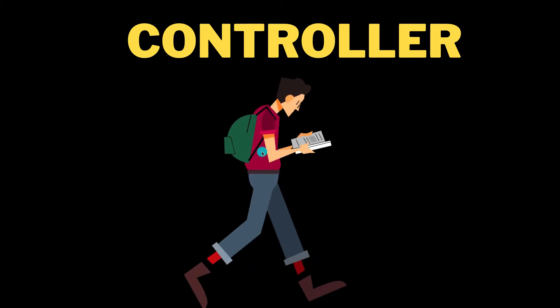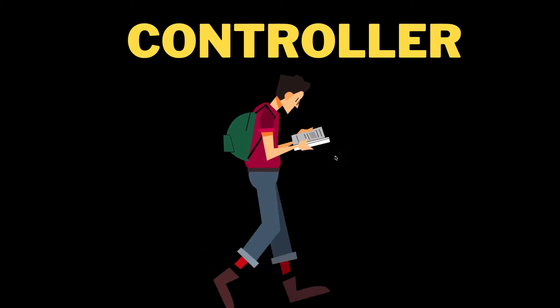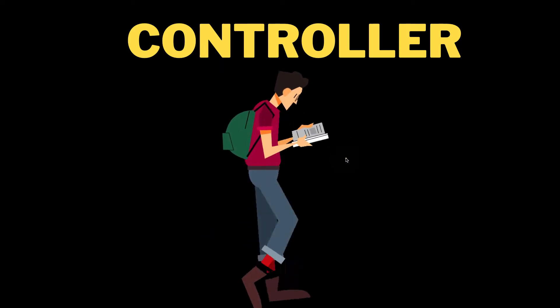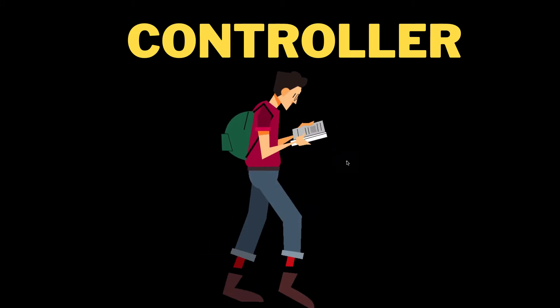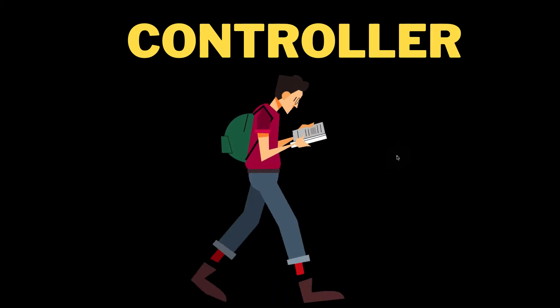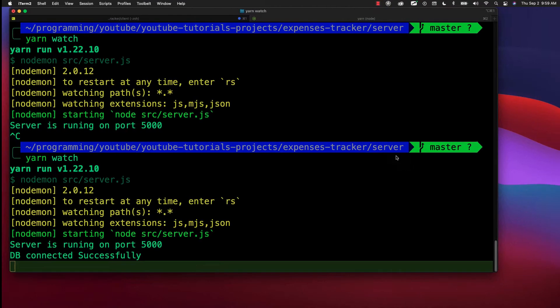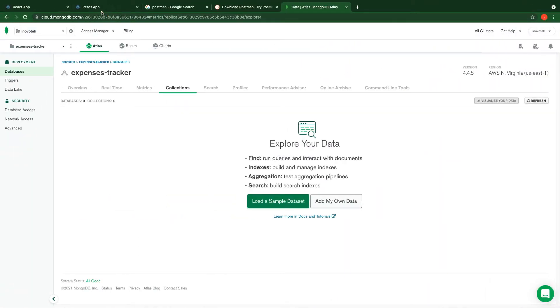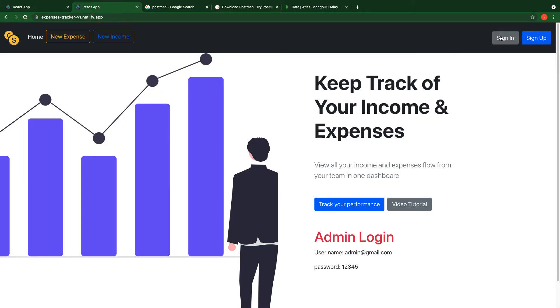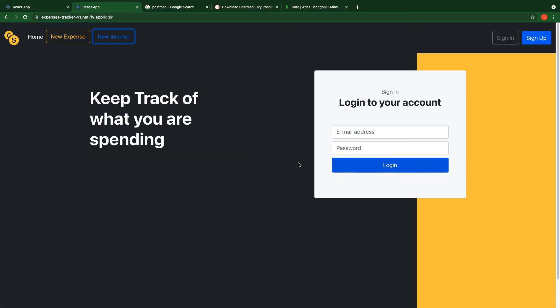But before that, let's explain what is a Controller. A controller contains the business logic of your application. For example, if you are not logged in, you cannot create an account. If you look at our final project—this one—when I'm not logged in and I'm trying to create a new income, you see that it asks me to log in. That is the controller working.